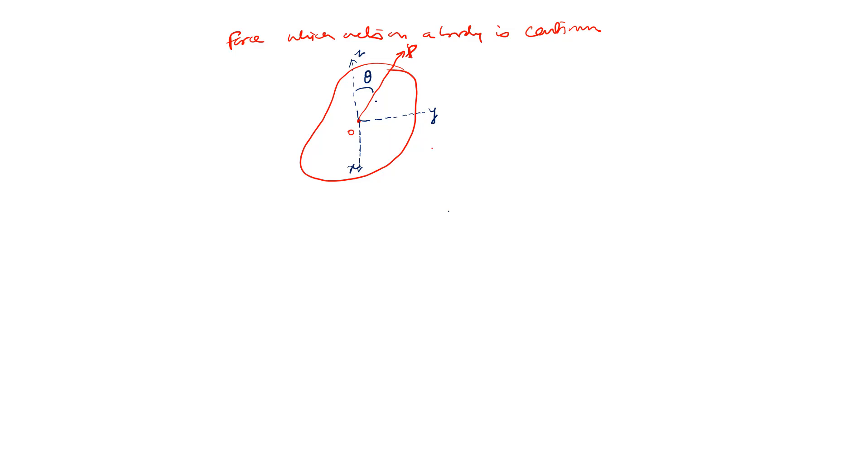So this stress will make some angle with normal, that is theta, and this stress will also make some angle with x and y. So what happens here? We try to understand what is the stress distribution at this point in different coordinates. So stress distribution in different coordinates.